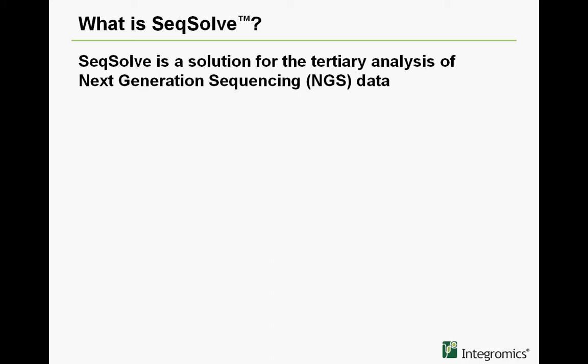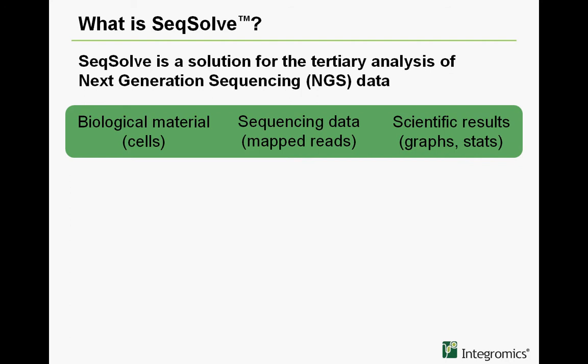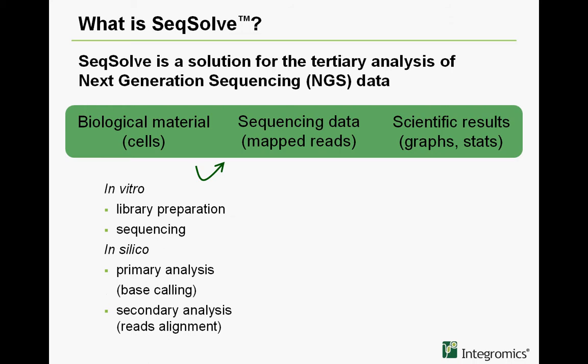SIGSOLVE is a software solution for the tertiary analysis of NGS data, which corresponds to the downstream part of the pipeline. If you consider a typical NGS workflow, the experimental part and the primary plus secondary steps of the bioinformatics part generate sequencing data, typically in the form of short reads that are aligned on a genomic reference. To get results from this data, you need some tertiary analysis to be done, and that is precisely what SIGSOLVE does.